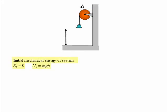Okay, so let's analyze the problem. The initial mechanical energy of the system: well, the kinetic energy is zero, and the potential energy is just mgh. We're taking here the zero of potential energy to be at ground level.